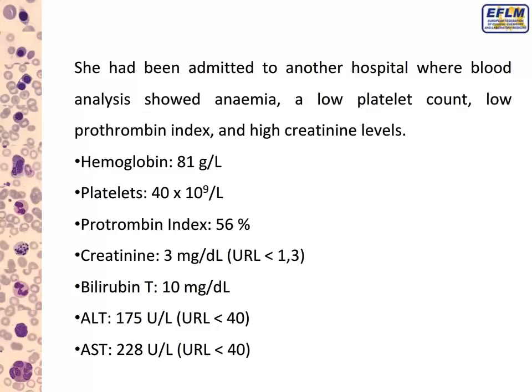She had first been admitted to another hospital where blood analysis in the clinical lab showed anemia, low platelet count, low prothrombin index, and high creatinine levels. The hemoglobin values were low, platelets also low at 56 × 10⁹/L, prothrombin index only 56%, creatinine was high at 3 mg/dL, total bilirubin was 10 — and most of this bilirubin was indirect. Hepatic transaminases were also increased.